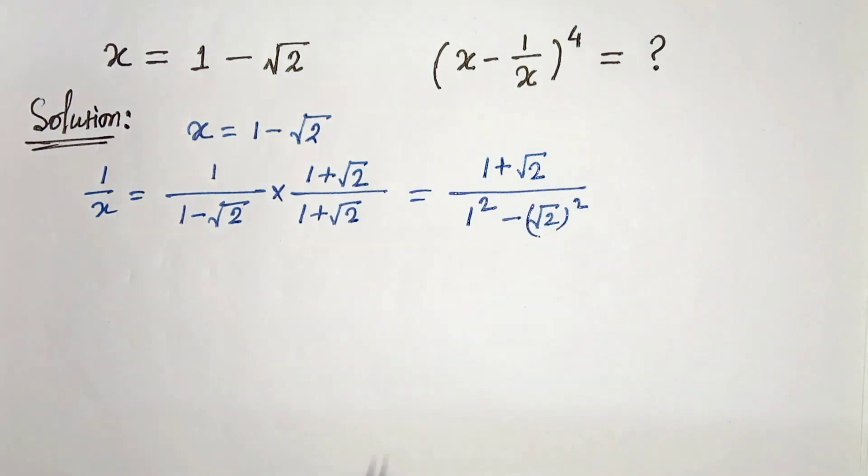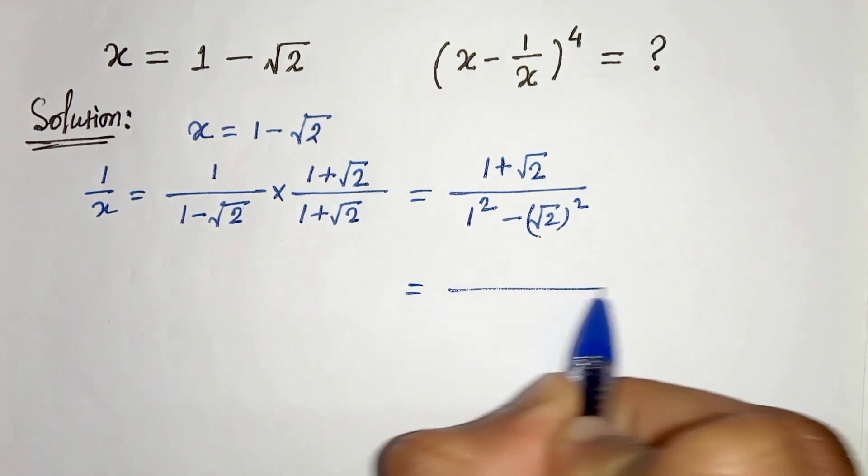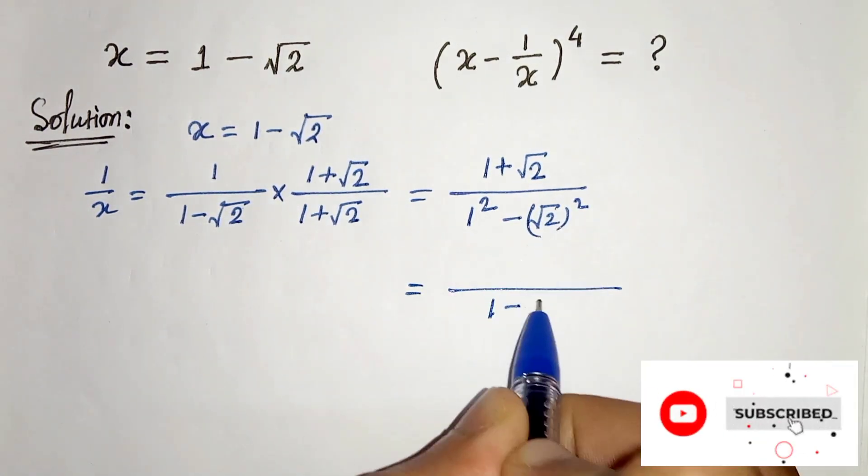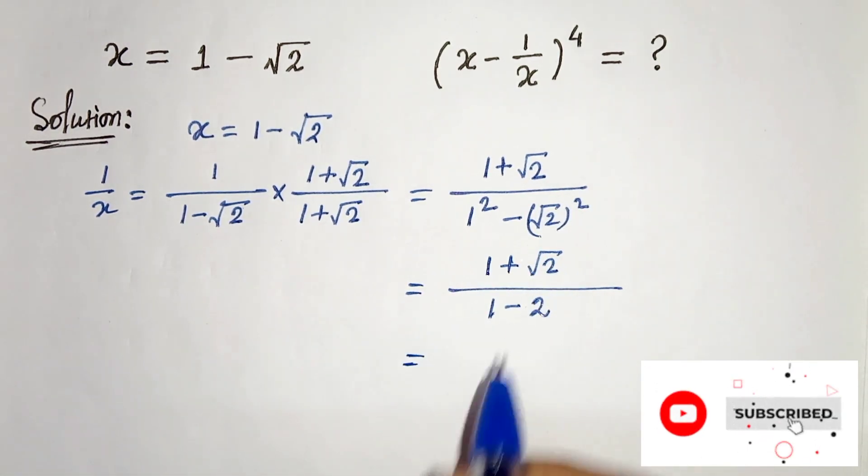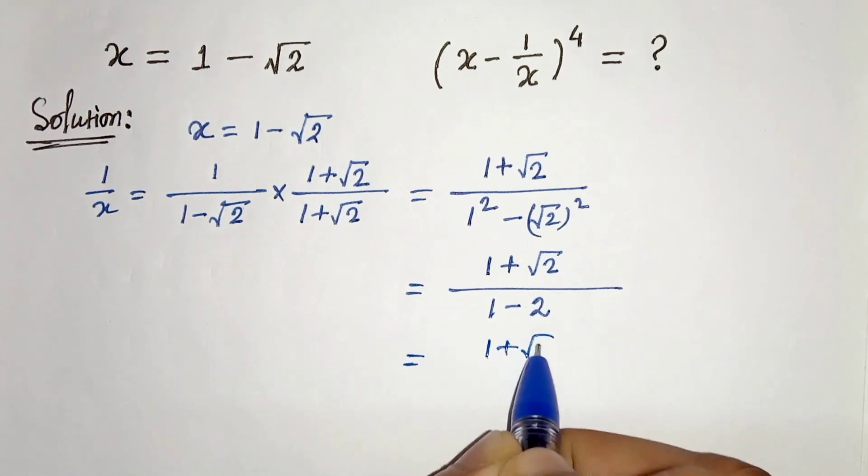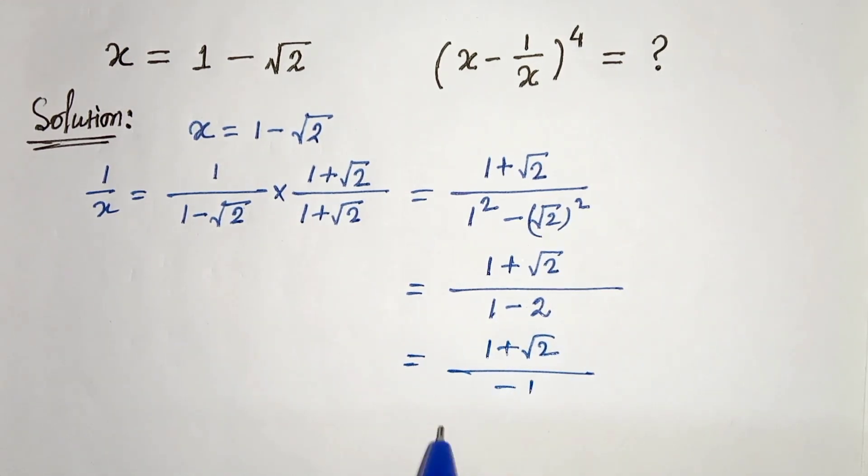So in the next step, we can write 1 minus root 2 square is 2. So in the next step we will get 1 plus root 2, 1 minus 2 is minus 1. Therefore we can write minus 1 minus root 2. This is our 1 by x.